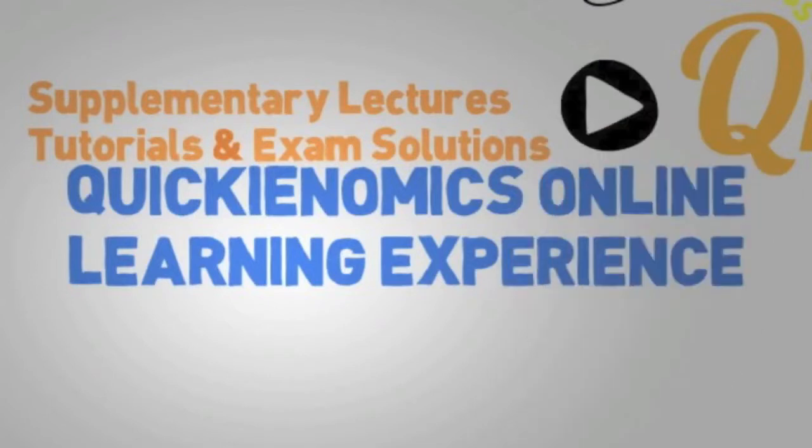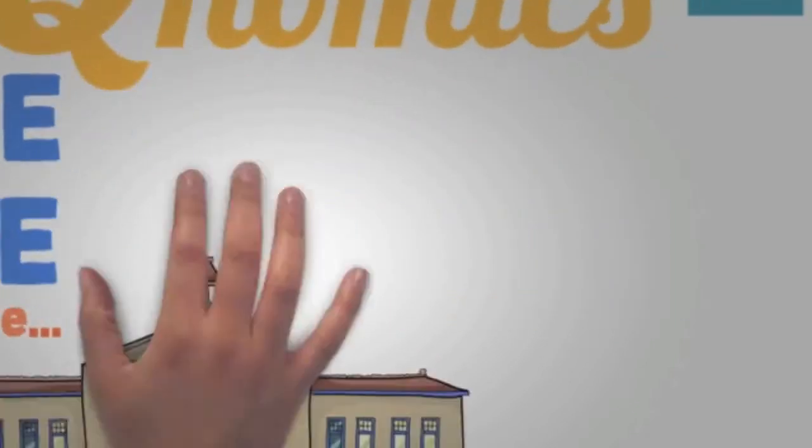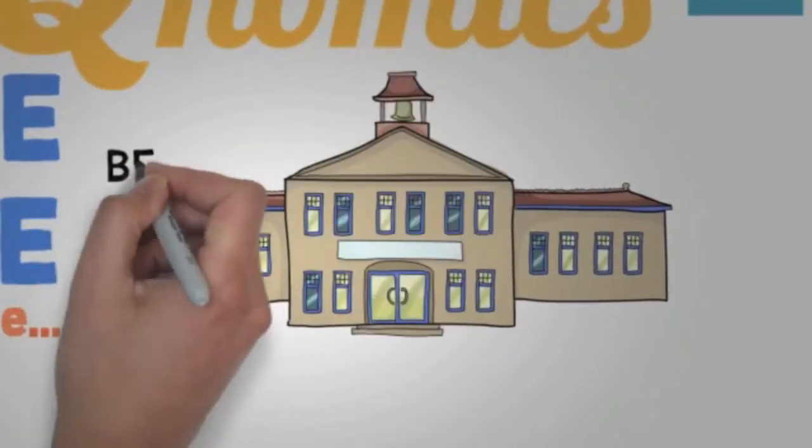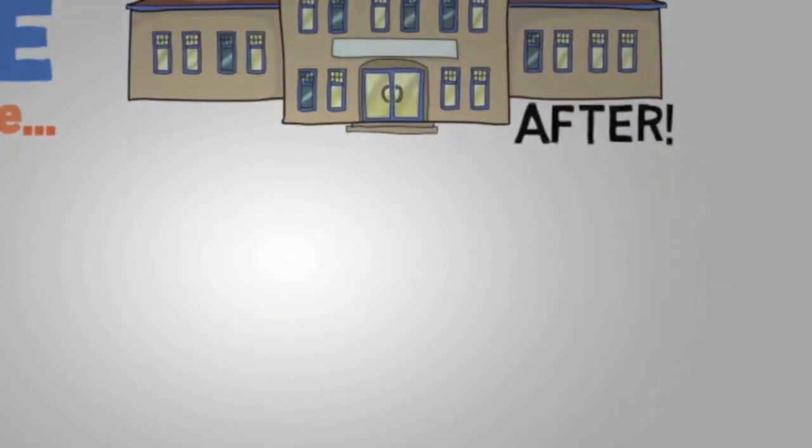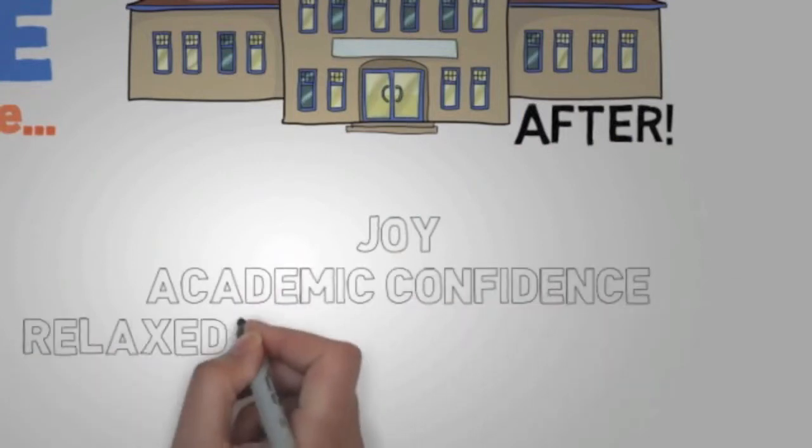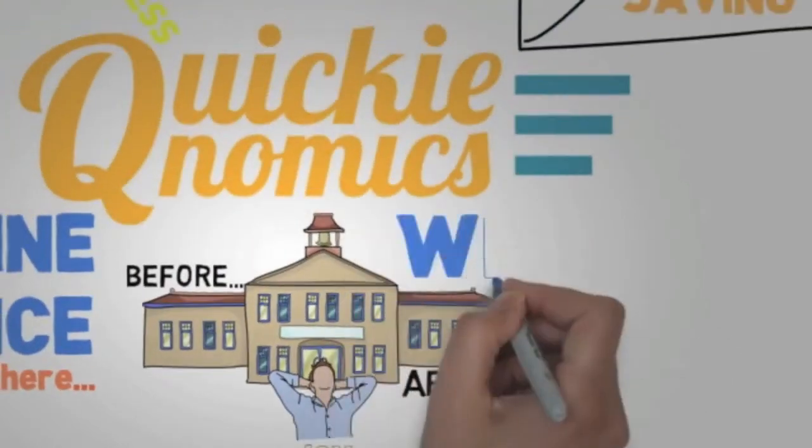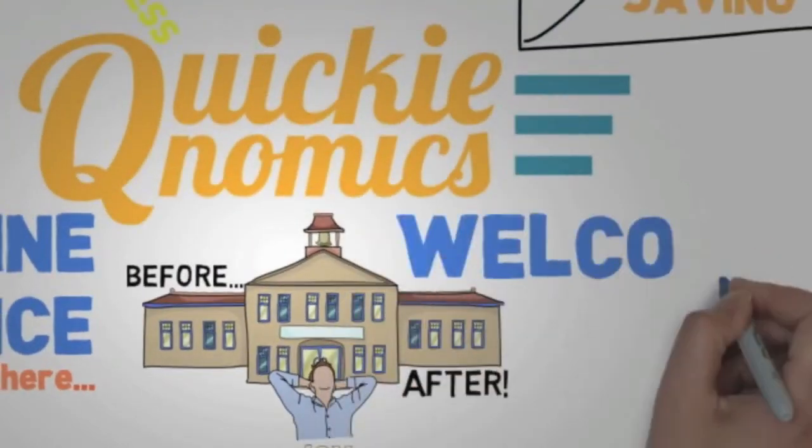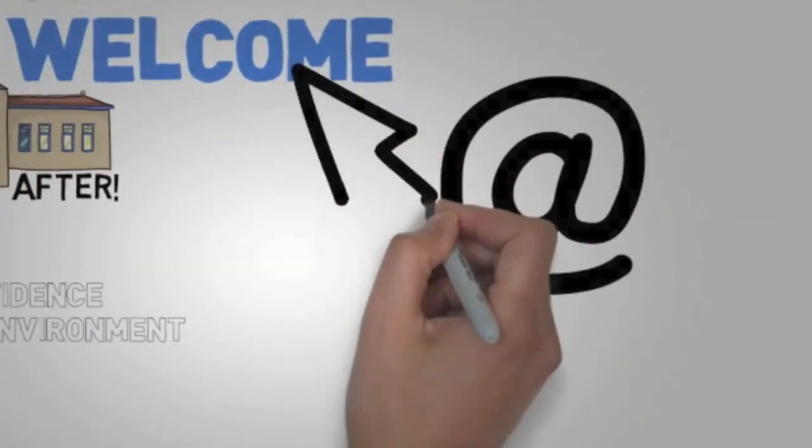The Quickenomics Online Learning Experience is a range of supplementary lectures, tutorials and exam solutions in the form of videos which you can conveniently view anytime, anywhere. Watching our videos before and after your regular lessons at school, we aim to give you joy in learning and build academic confidence at the comfort of your own relaxed learning environment. So how can you begin? We welcome you to purchase Quicked Hours to redeem the videos for full access to the Quickenomics Online Learning Experience. Thank you for starting with Quickenomics.